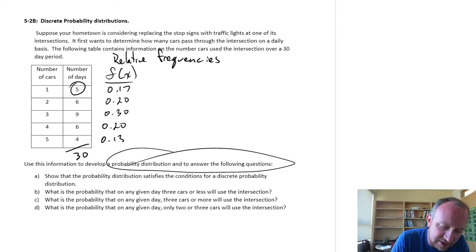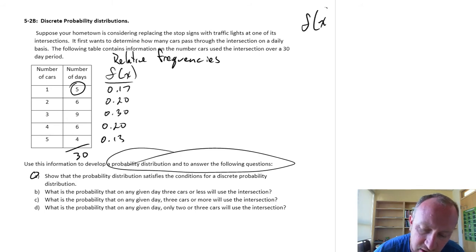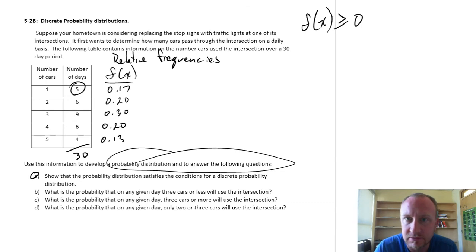Does it satisfy part A, does it satisfy the conditions for a discrete probability distribution? Well those characteristics, or those conditions, aren't too stringent. One is that they are all non-negative values. So all of our frequencies are greater than or equal to 0. Looking at those, yes, I see they're all greater than or equal to 0. No problems there.